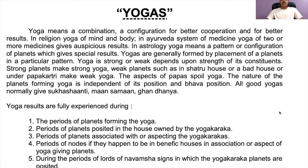Now coming to yoga — what does yoga mean? Yoga means a combination or configuration for better cooperation and better results. In religion, yoga means a union of mind and body. In Ayurveda system of medicine, yoga means a combination of two or more medicines for auspicious results. In astrology, yoga means a pattern or configuration of planets which gives special results.